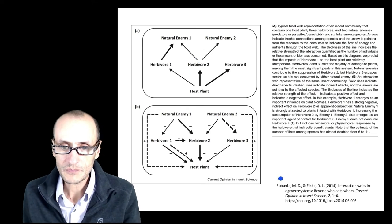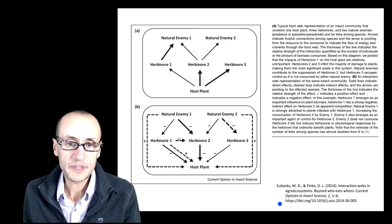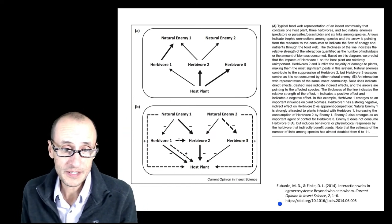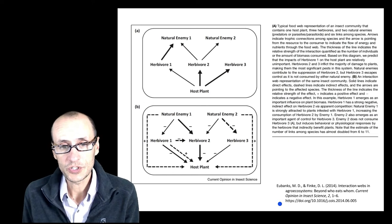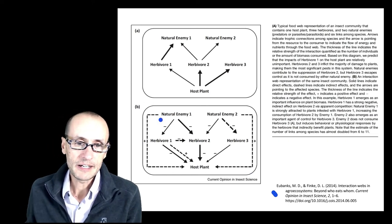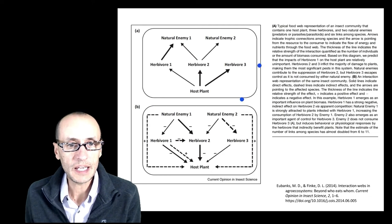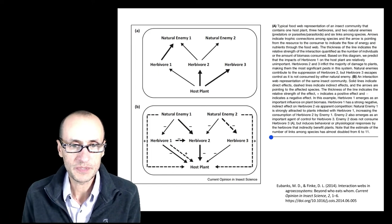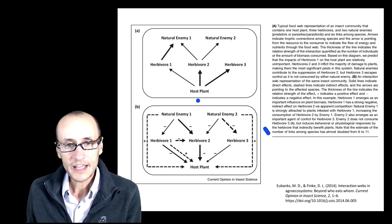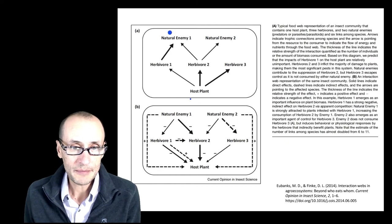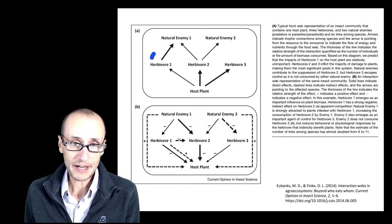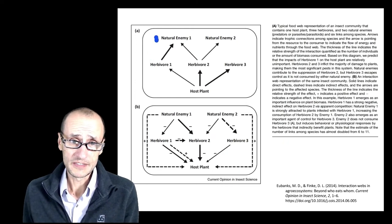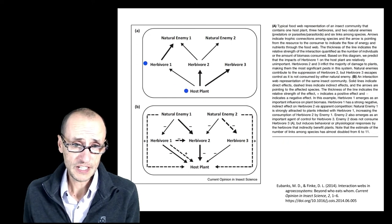Just to wrap this up, there's a very nice summary of some of these ideas by Mickey Eubanks and Debbie Finke. You may recognize them as two of the authors of your textbook that kind of contrasts these two different ways of thinking about food webs. And I'm not going to read you through this here. This reading is available in our bonus materials for the week. But again, the early paradigm of understanding food webs was to think about how predators affect their prey. In this case, a natural enemy feeding on an herbivore, for example, which feeds on a host plant.